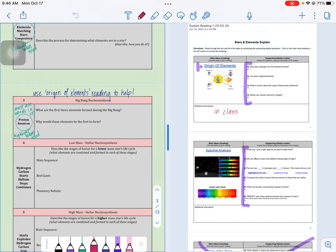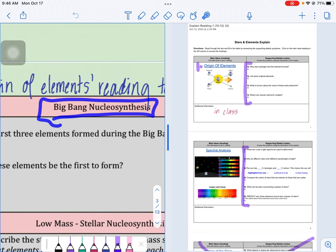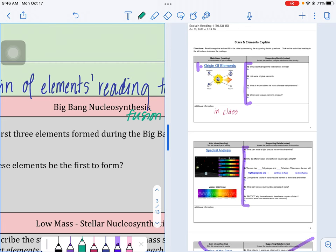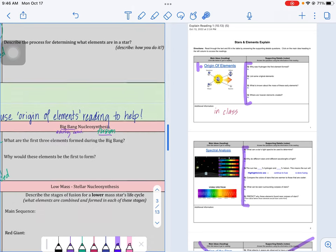All right, so our focus here is learning target number three, which is focused on the Big Bang nucleosynthesis. Nucleosynthesis is that fancy word for fusion, where we have elements forming through combination or combining. And then of course, Big Bang is that early universe. So we're thinking about fusion or combination of things to create new elements during the formation of the universe, during that Big Bang.